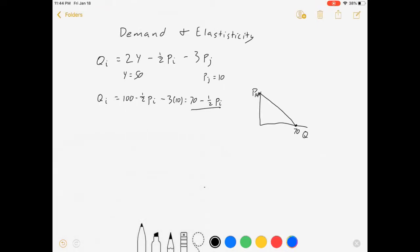Something to point out though is now that we have these other variables, we have something concrete in here, something we know could change demand. What if income goes from 50 to 60? Well, now our demand curve changes. It's 120 minus half pi minus 30. So 90 minus half pi. That has the effect of shifting demand outwards.